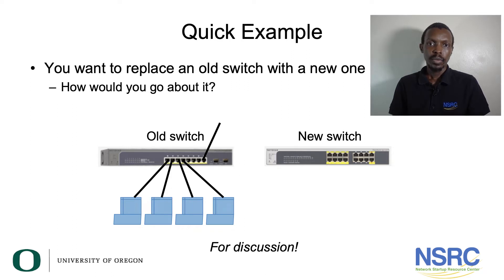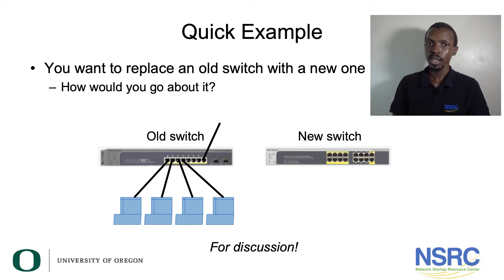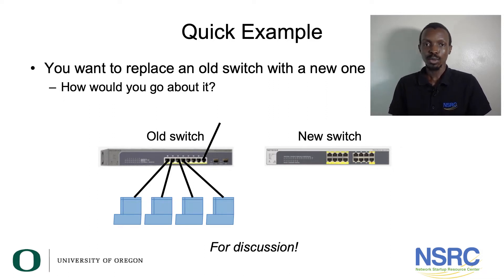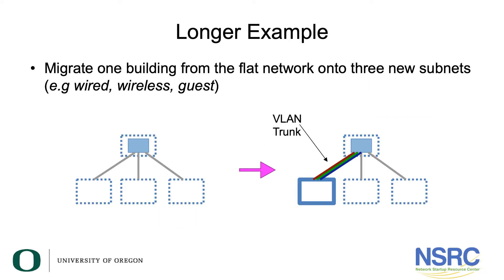Let's take a quick example: you have a new switch and you want to replace an old switch. How do you go about it? Would you just unplug the switch and plug in the new one? Which steps would you do? Would you link the two switches, try to copy the configuration? How would you make sure that both switches can work at the same time while you move nodes from one to the other? We have a flat network on the left and we want to migrate onto three new subnets — for example, wired, wireless, and guest — while the rest of the network remains on the old flat network.